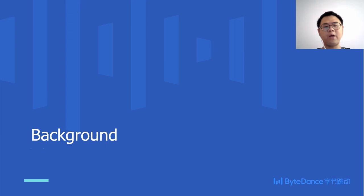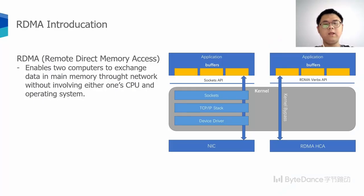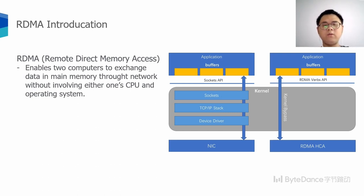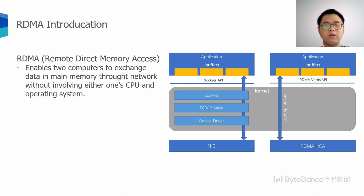Let me give you some background information. RDMA is short for Remote Direct Memory Access. It is a technology that enables two computers to exchange data in memory through networks without involving either one's CPU and operating system. Compared with the traditional network, RDMA network supports zero copy. The RDMA data transfer bypasses the kernel networking stack and offloads the stack into the hardware, which can greatly improve the network performance and save CPU resources.